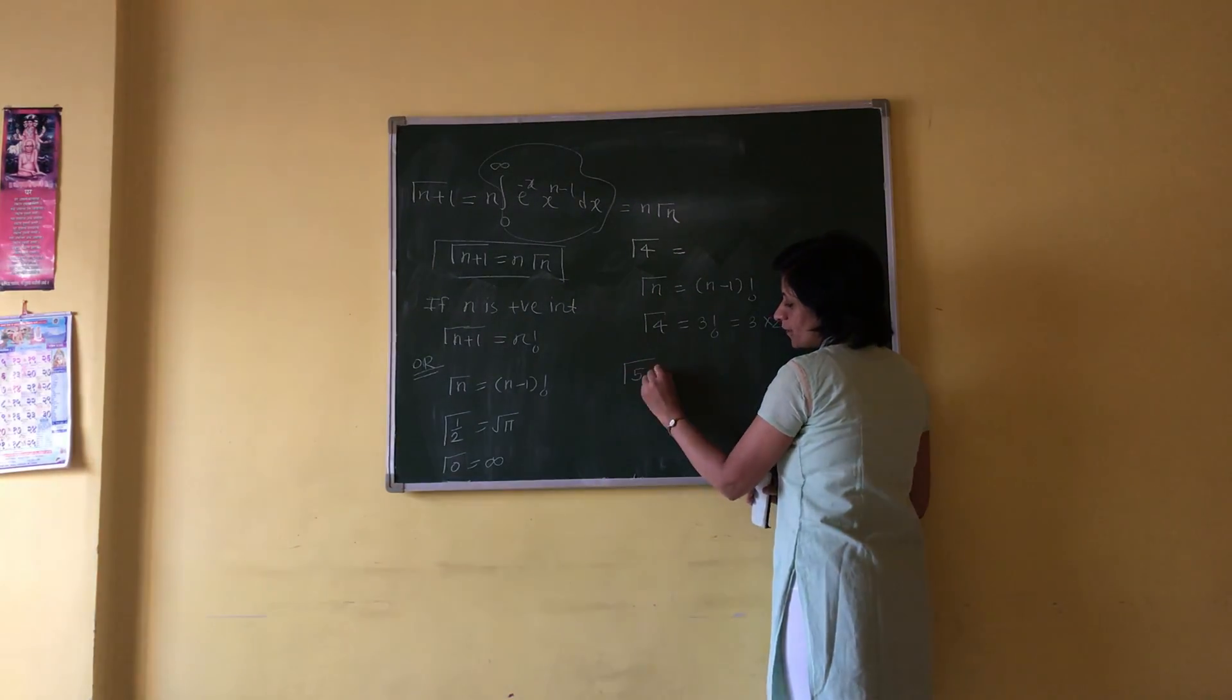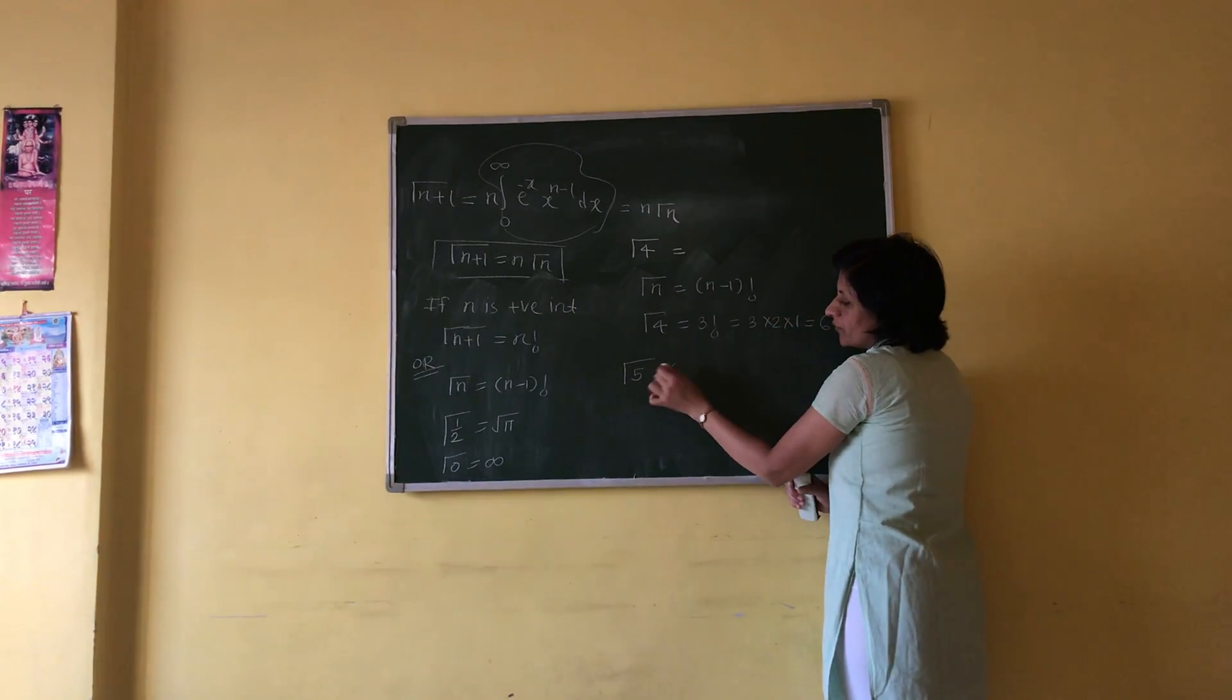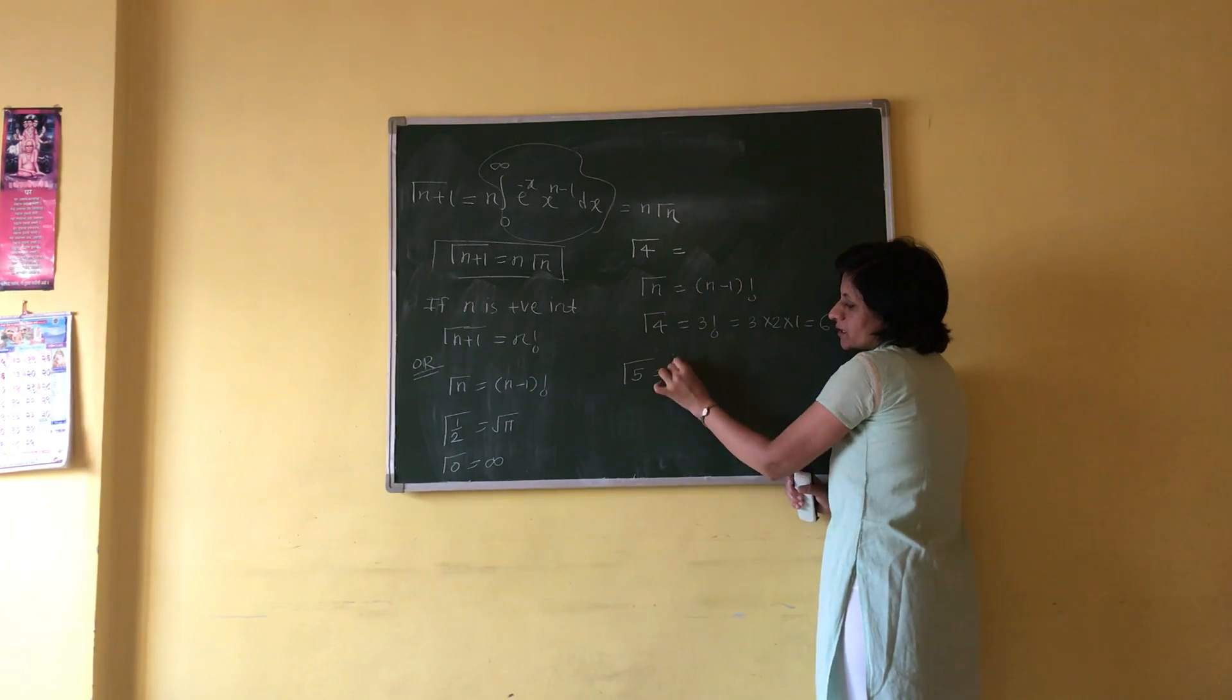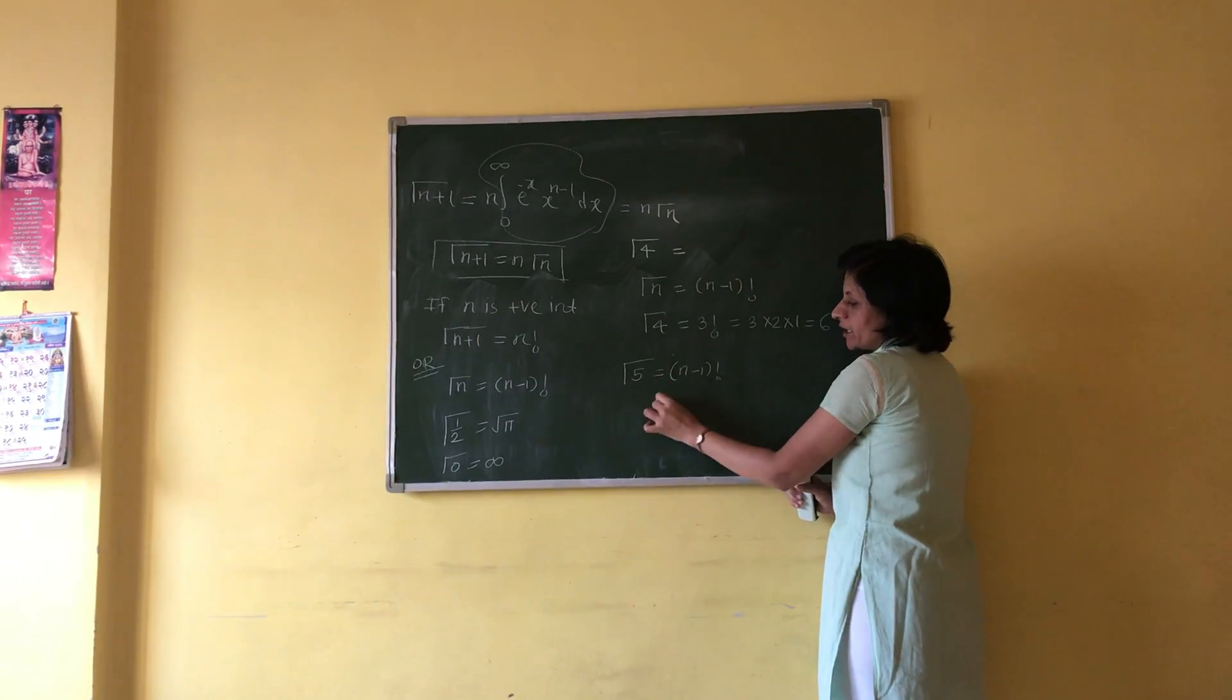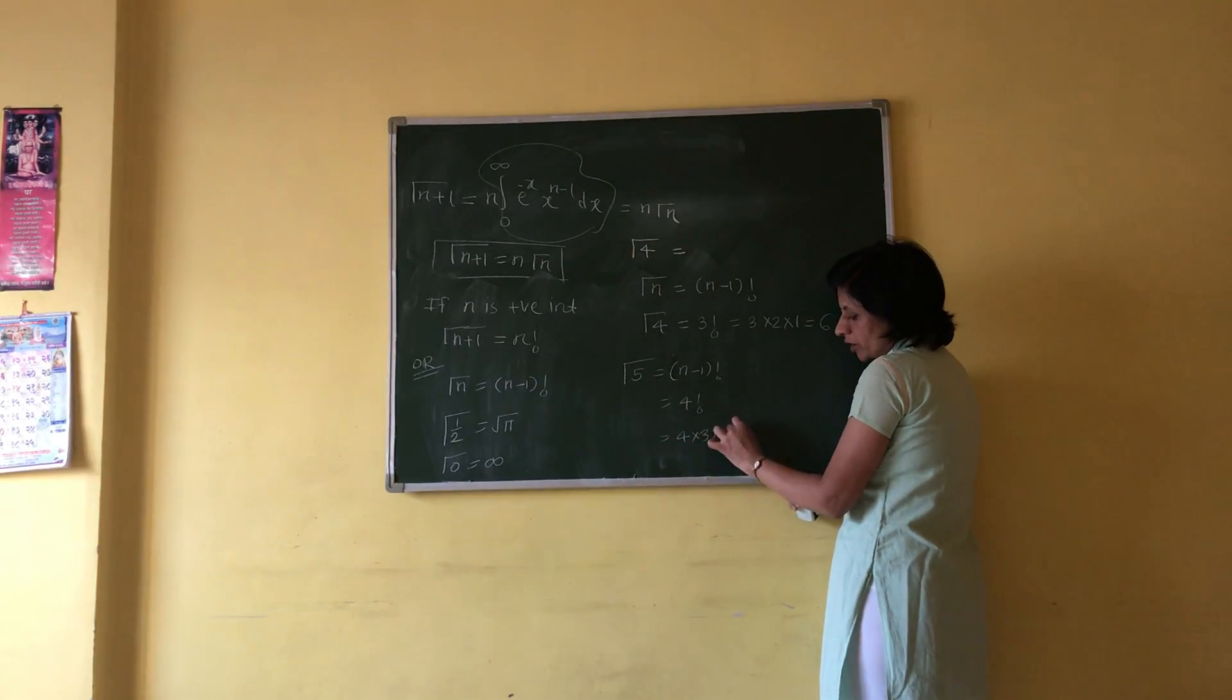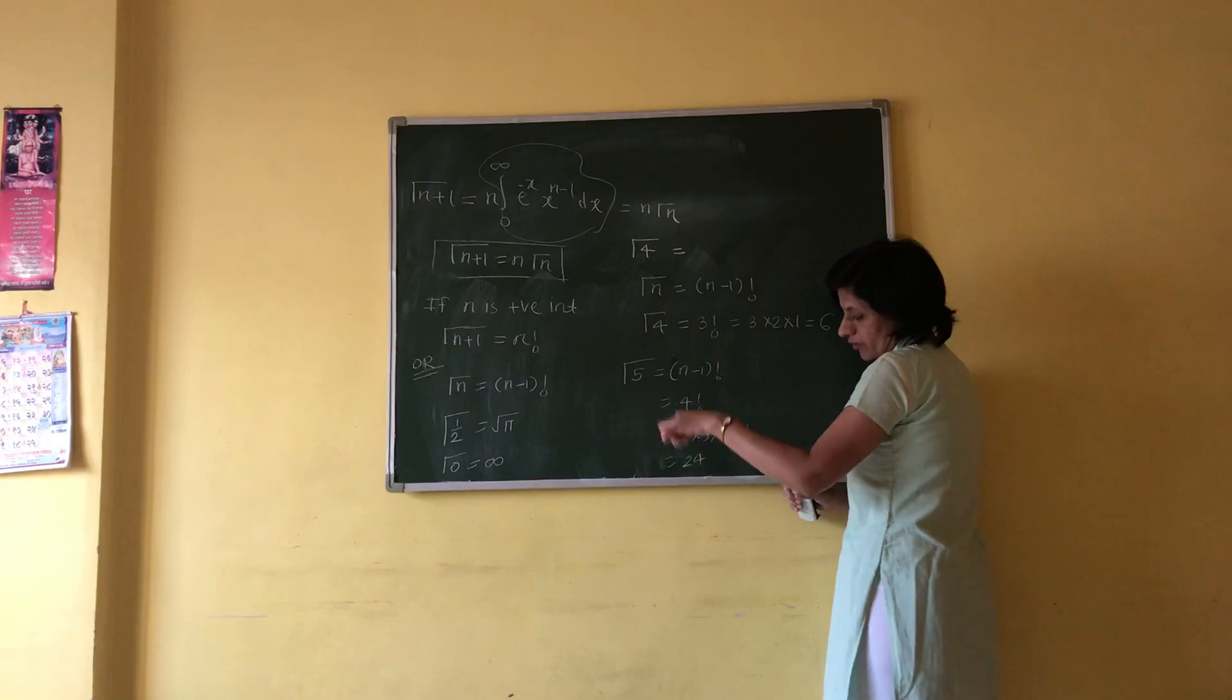Similarly, to find gamma 5, using gamma n equals n minus 1 factorial, we get 5 minus 1, which is 4 factorial. 4 factorial means 4 times 3 times 2 times 1, which equals 24.